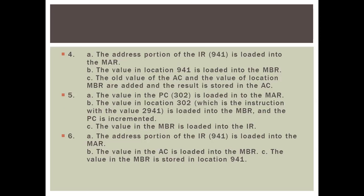For step 5, the value in the PC, which is 302, is loaded into the MAR. The value in location 302, which is the instruction with value 2941, is loaded into the MBR, and the PC is incremented. The value in the MBR is loaded into the IR. The address portion of the IR, 941, is loaded into the MAR. For step 6, the value in the AC is loaded into the MBR, and the value in the MBR is stored in location 941. That's all from my explanation about these two questions. I hope you can understand, and see you next time. Thank you.